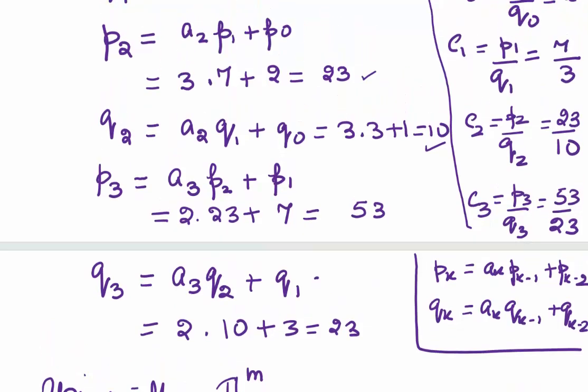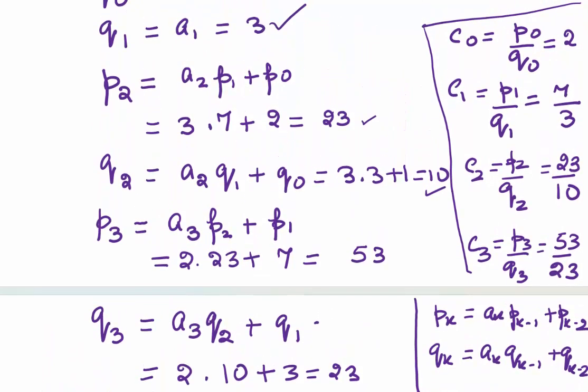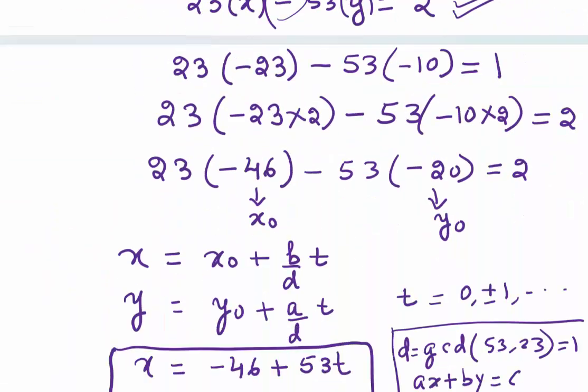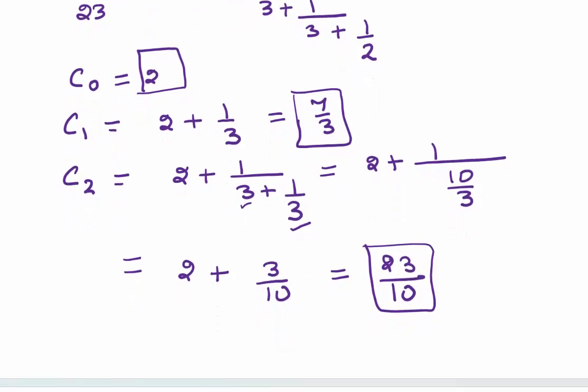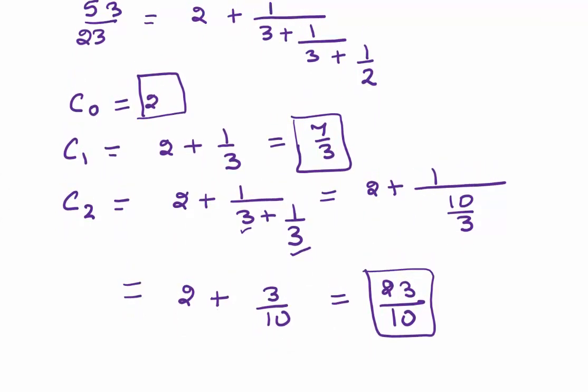You see, we have all our convergents directly from the continued fraction. These are the values which you got here. You got C0 = 2, C1 = 7/3, and C2 = 23/10. C3, of course, is the original fraction, 53/23. So if you are careful, you can directly find the convergents without using the formula.